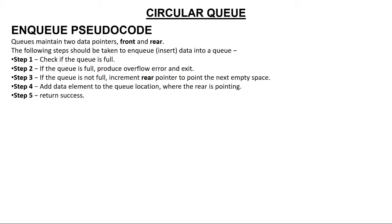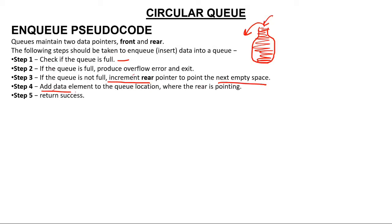Now let's start with the enqueue algorithm of circular queue. If you want to insert an element in a queue, the first thing you check is whether the queue is full — you can only insert if there is availability of space. It's like a bottle: if the bottle is already full and you pour more water, it will overflow. So if the queue is full, produce an overflow error. If the queue is not full, you have the privilege of inserting: first increment rear to point to the next empty space, then add data to the location where rear is pointing, and return success.